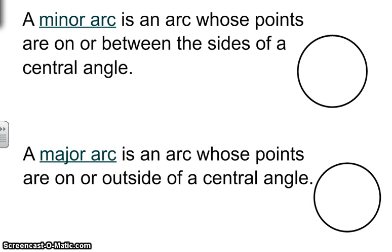Next are the minor arcs. In a minor arc, it is points whose points are on or between the sides of a central angle. So in your circle, your central angle, you can put anywhere, but I'm going to choose to put mine there. So there's my central angle because it's coming from the center. The minor arc is going to be this one. So label that with an A and a B again. The minor arc is going to be with two letters this time.